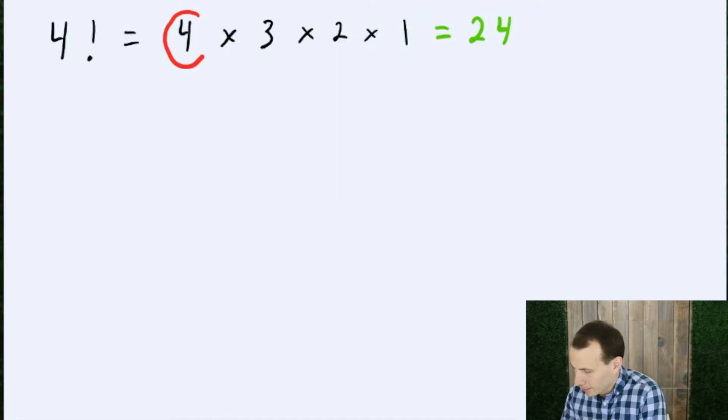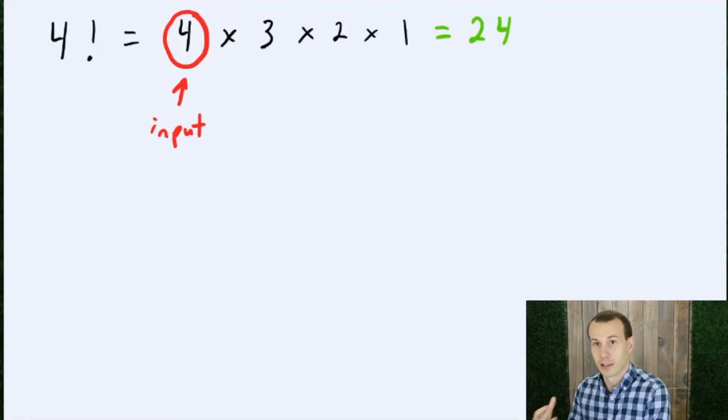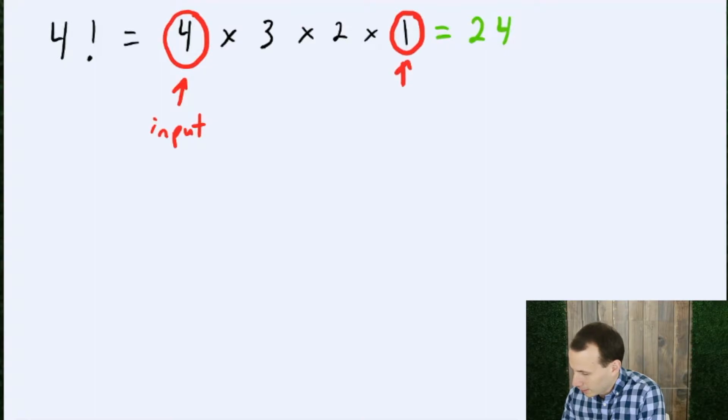So we notice a few things right off the bat, that this number right here is our initial input. This is that input that when we first call the function, it's what we eventually want the factorial of. We also notice that right here we have a very clear base case.